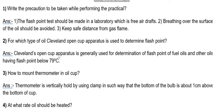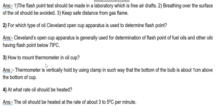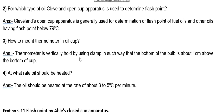Second question: for which type of oil is Cleveland's open cup apparatus used? Cleveland's open cup apparatus is generally used for determination of flash point of fuel oil and other oils having a flash point below 79°C. How to mount the thermometer: it is held vertically using a clamp so that the bottom of the bulb is about one centimeter above the bottom of the cup.